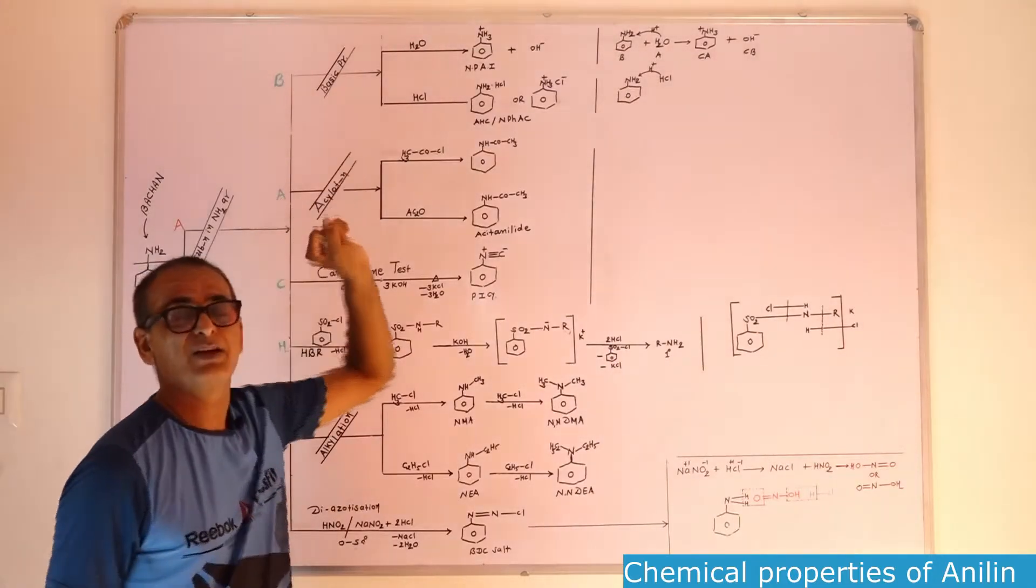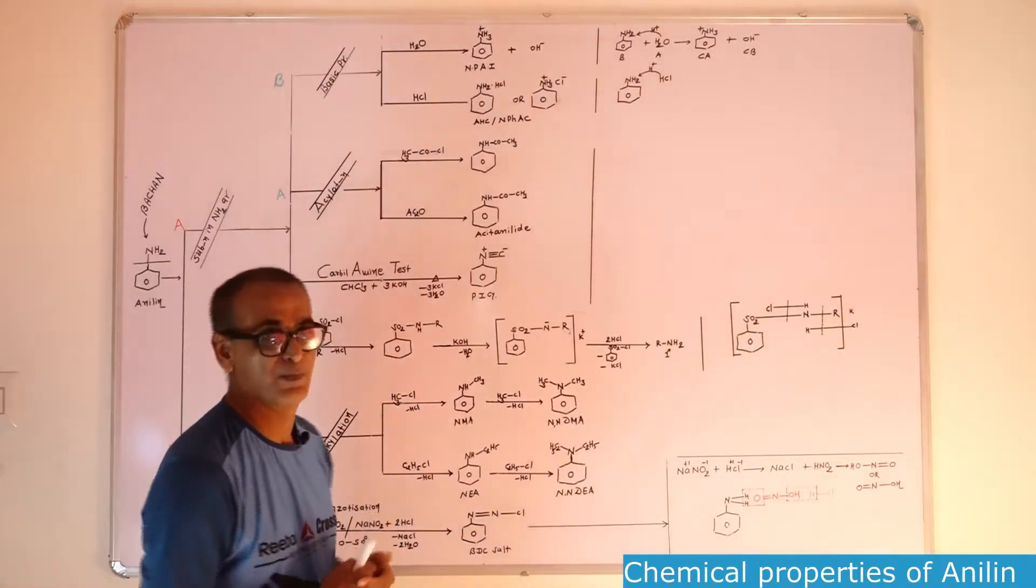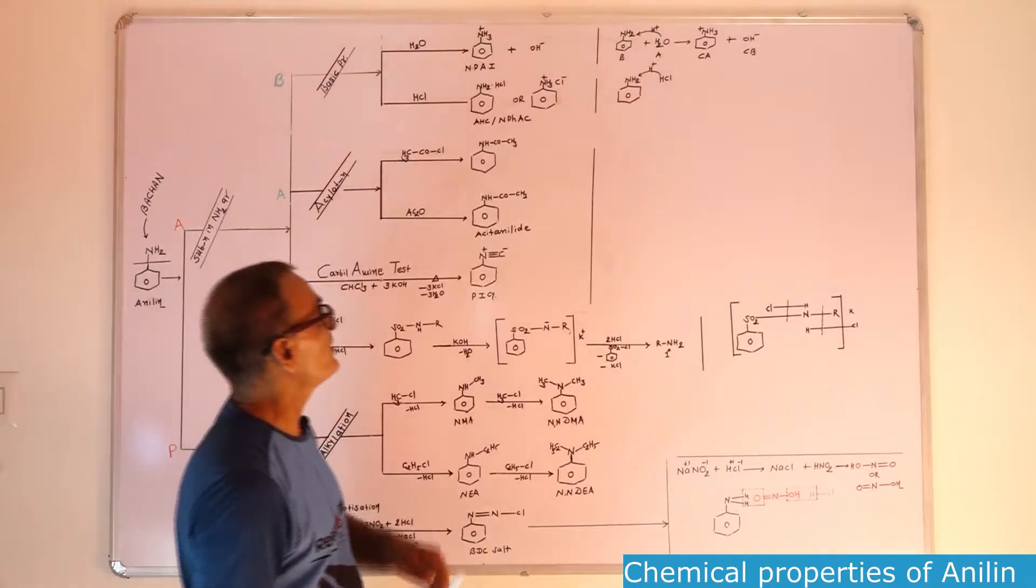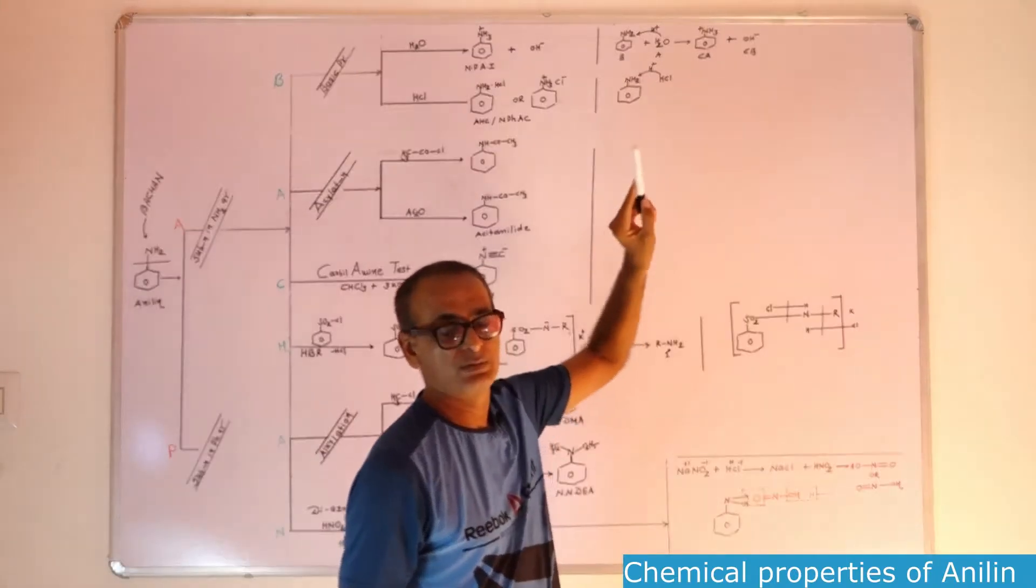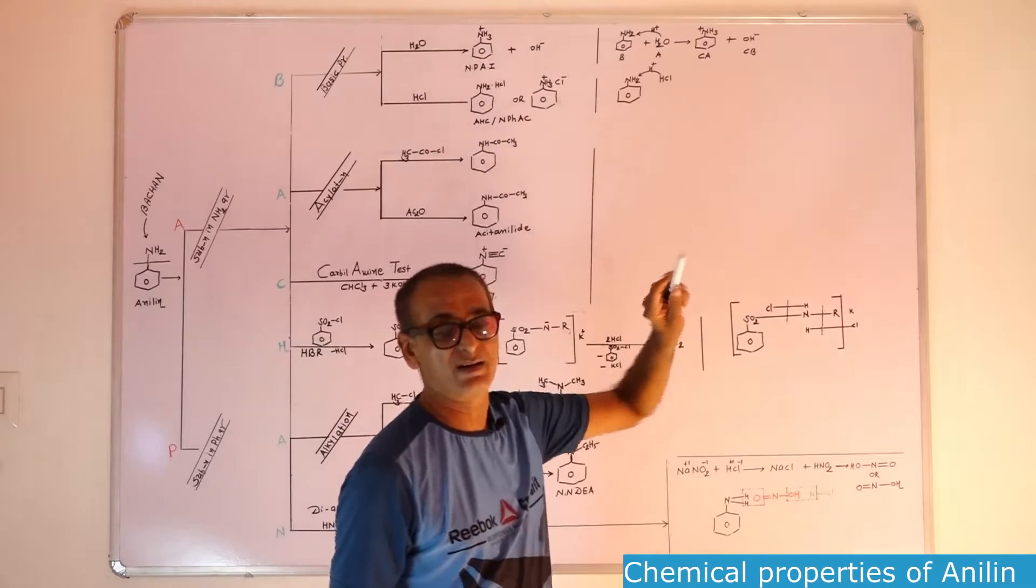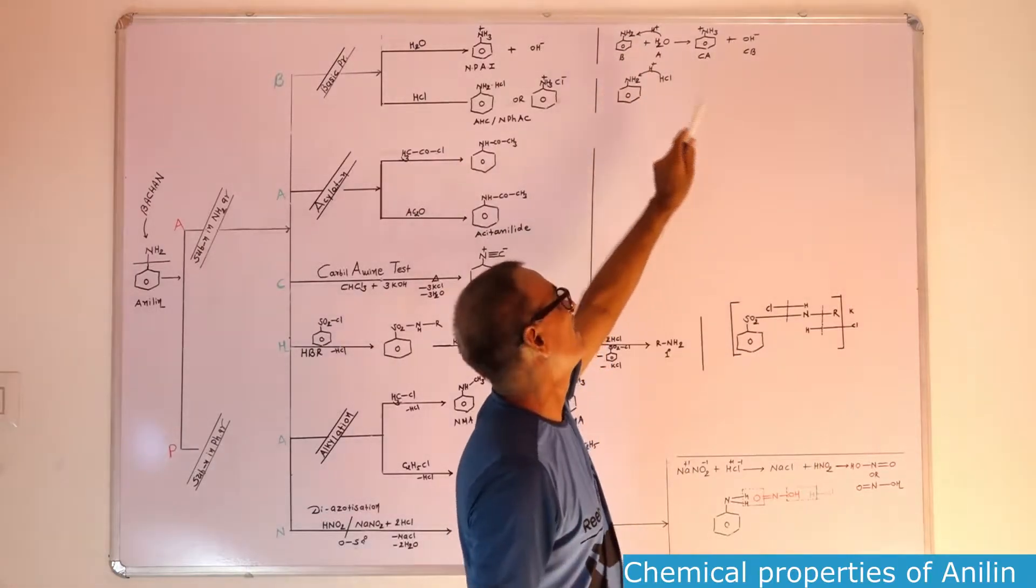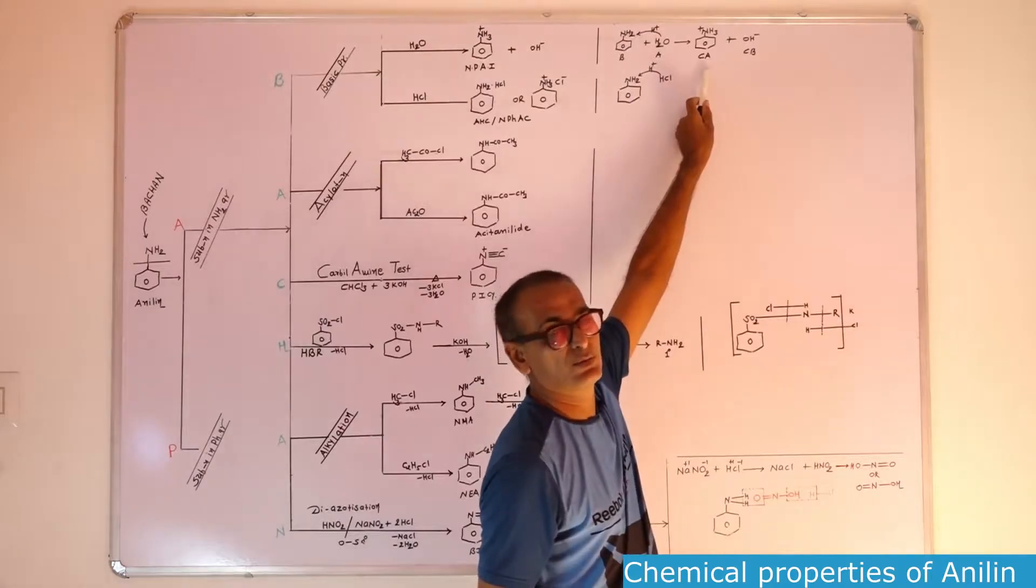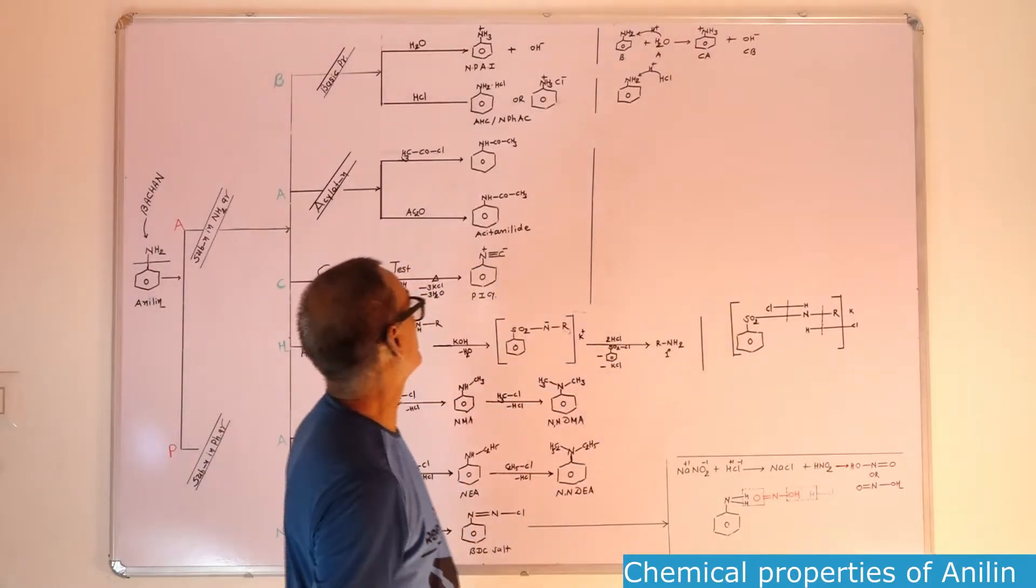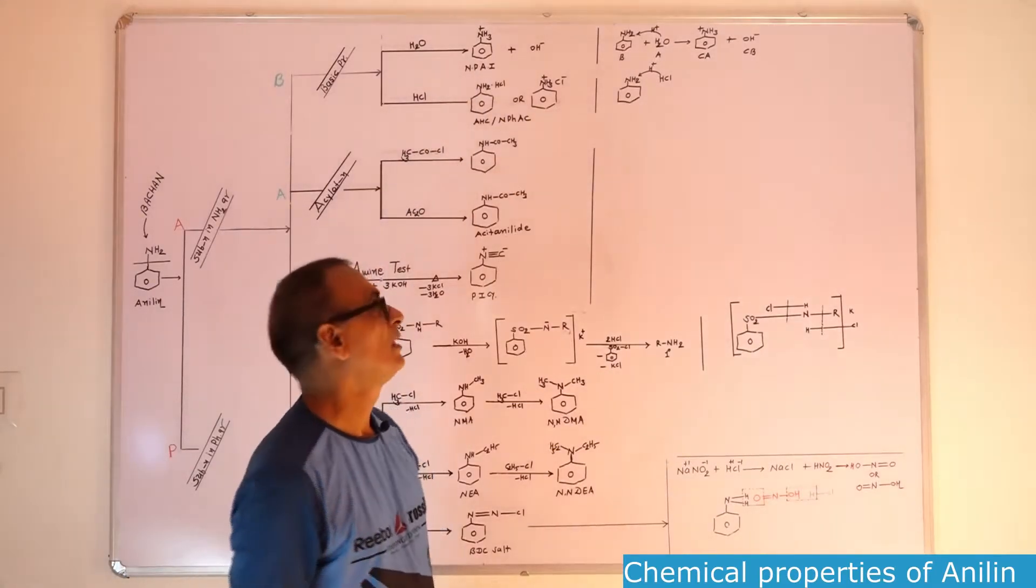Basic property can be explained by two reactions. There are two reagents which are used to explain the basic property of aniline: first one water, second one hydrochloric acid. Aniline is a basic compound. Water will always act as acid with base as per Lowry-Bronsted theory. Here water will lose one H+ and give to aniline, and aniline will convert into conjugated acid and water will convert into conjugated base. That's why our product will be N-phenyl ammonium ion and hydroxide ion.